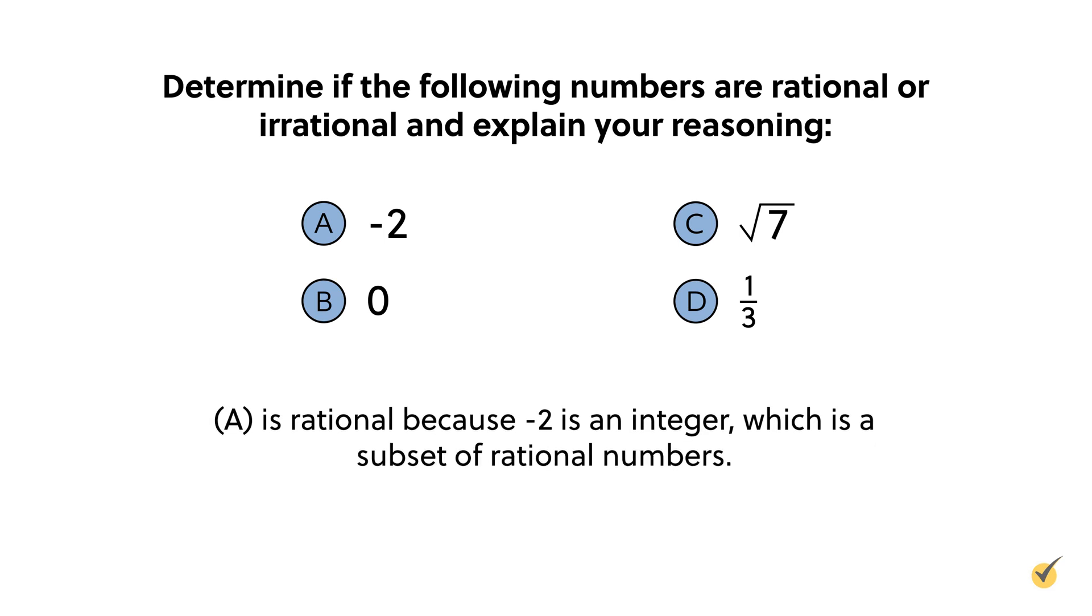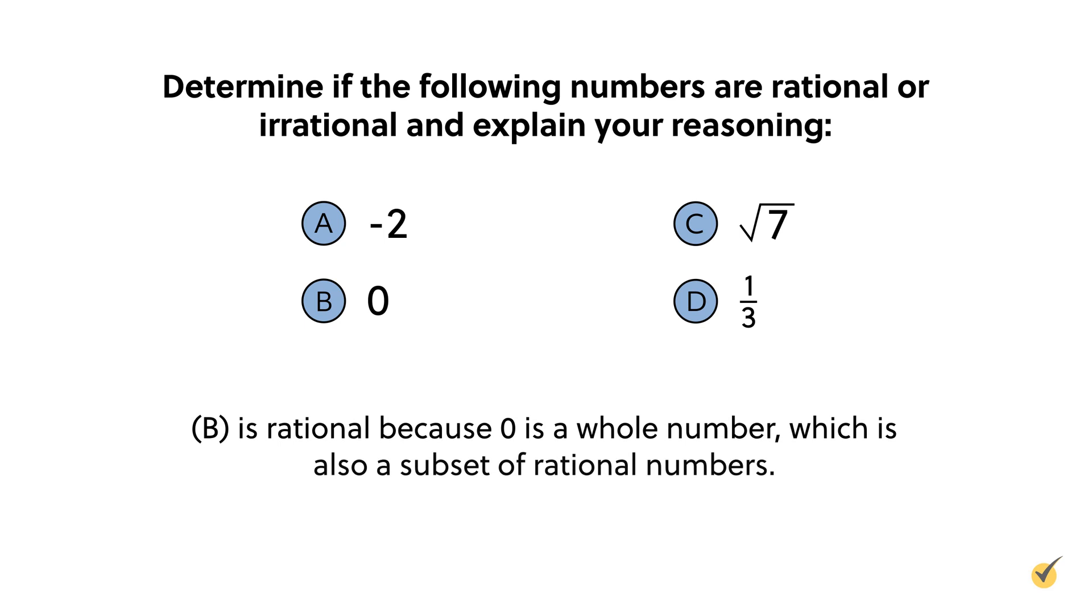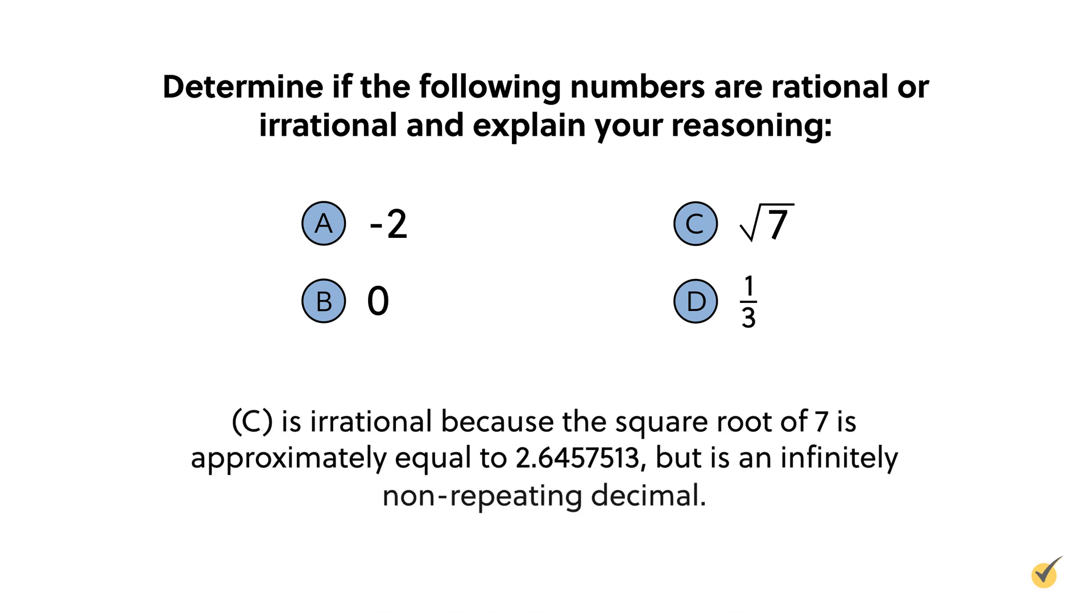A is rational because negative 2 is an integer, which is a subset of rational numbers. B is rational because 0 is a whole number, which is also a subset of rational numbers.